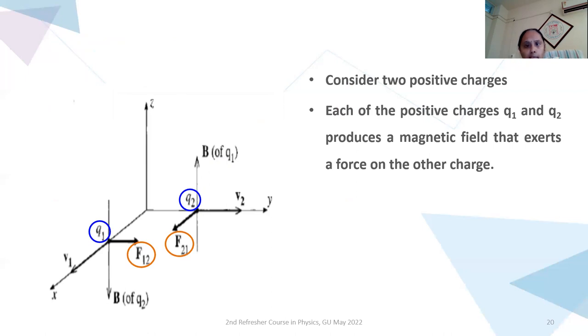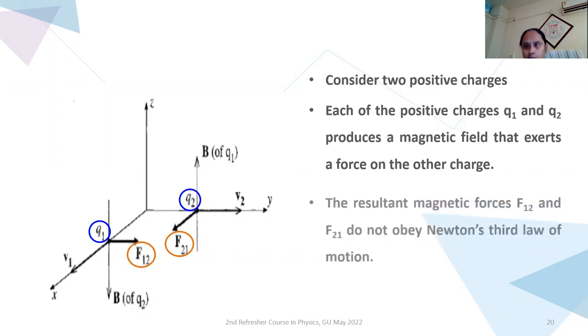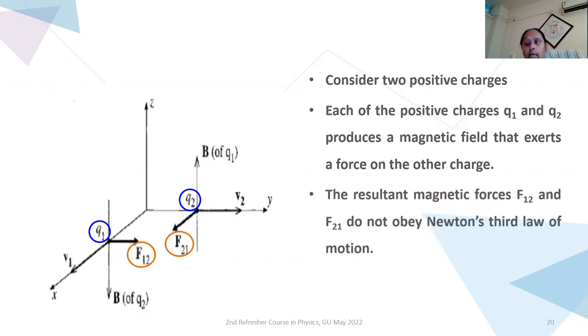Consider two positive charges, that is Q1 and Q2. Each of the positive charges Q1 and Q2 produces a magnetic field that exerts a force on the other charge. And the forces are represented by F12 and F21. The resultant magnetic forces F12 and F21 do not obey Newton's third law of motion. They will not be equal to, F12 will not be equal to minus F21, or I can say they are not equal and opposite. And so momentum conservation is not valid.